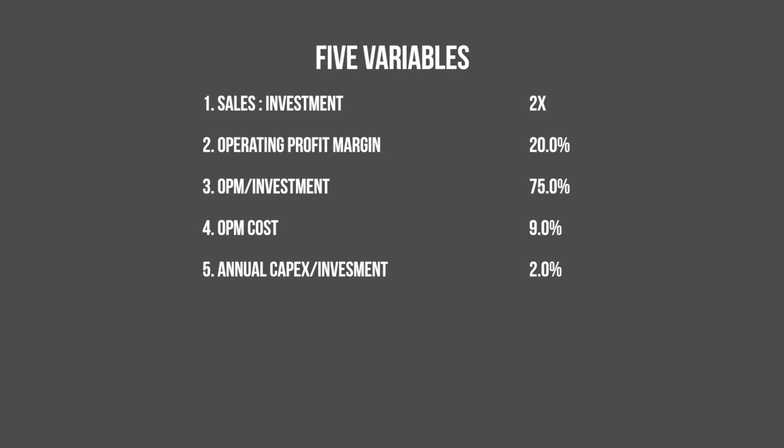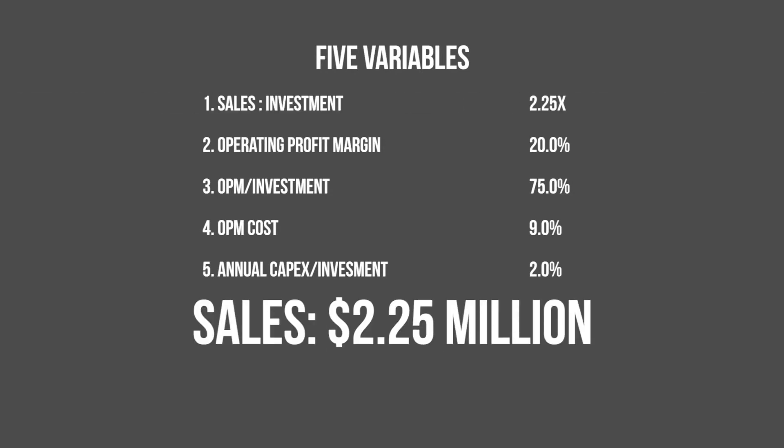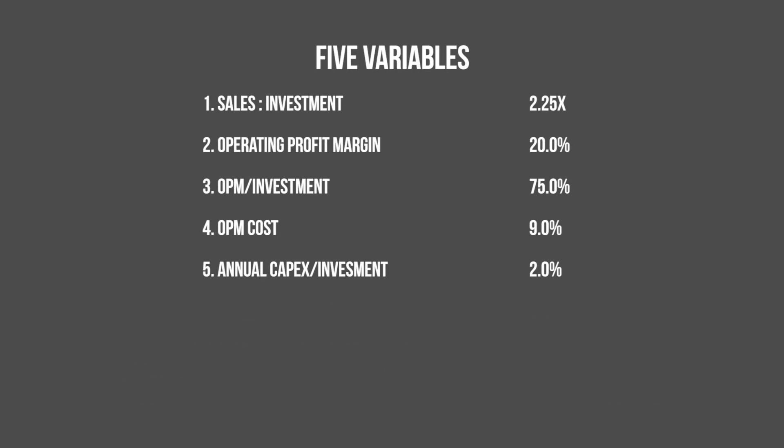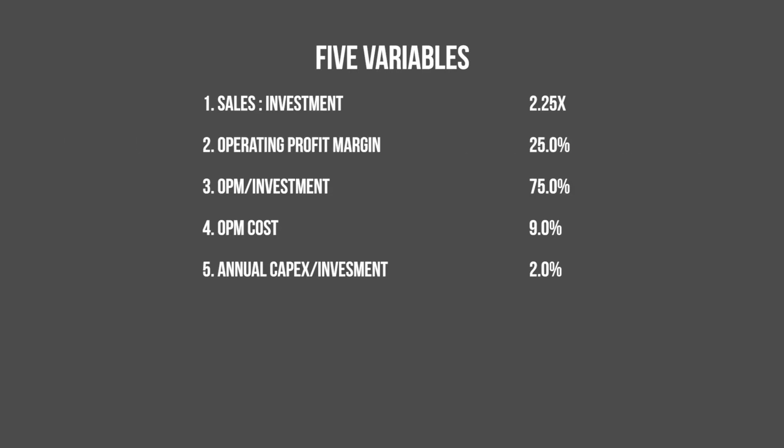Or you could have a 50% rise in sales to two and a quarter million dollars, and a modest investment rise to a million one hundred and twenty-five thousand dollars. Let's also assume that your operating profit margin rises from 20 to 25%, given your largely fixed costs and economies of scale. This means that your margin on the added sales was actually 40%, enabling you to boost your operating profit margin to 25%.